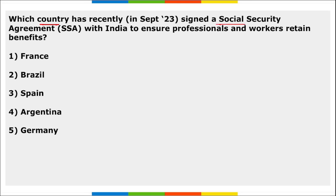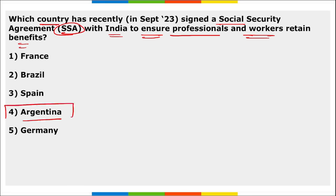Argentina recently signed a social security agreement with India to ensure professionals and workers retain their benefits and contributions, promoting easier mobility between the two countries. The agreement grants temporary overseas workers and their families full rights to benefits such as pension, rent subsidy, or lump sum payments without reduction or suspension.